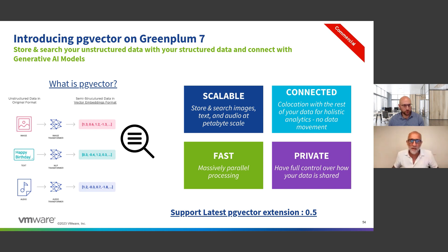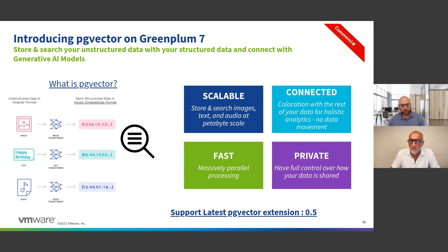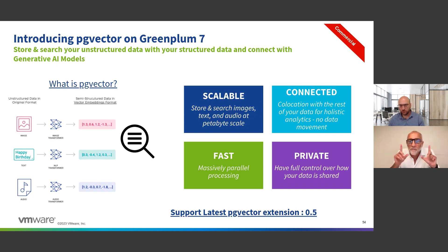You have image, text, audio, and video — you use a generative AI model with a transformer and produce an embedding. An embedding is a vector, which is an array of numbers, and the vector can have many dimensions — up to thousands. We provide the ability to store vectors, query vectors, and use specific indexes.